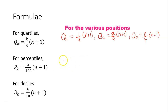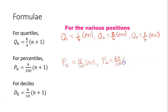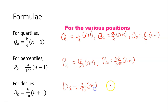For percentiles: to find the 15th percentile it's 15/100 × (n+1), and for the 60th percentile it's 60/100 × (n+1). For deciles: the second decile is 2/10 × (n+1), and the eighth decile is 8/10 × (n+1).